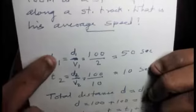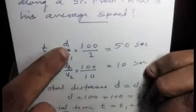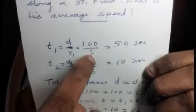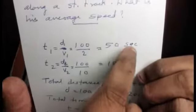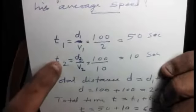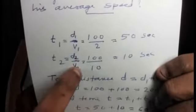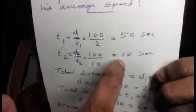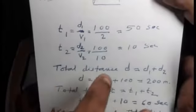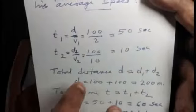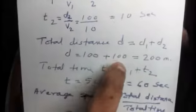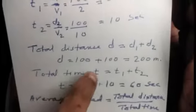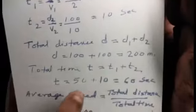Speed equals D by T, so V equals D by T, which means T equals D by V. For the first segment, T1 equals 100 divided by 2, which is 50 seconds. For the second segment, T2 equals 100 divided by 10, which is 10 seconds. Total distance D equals D1 plus D2, that is 100 plus 100 equals 200 meters.